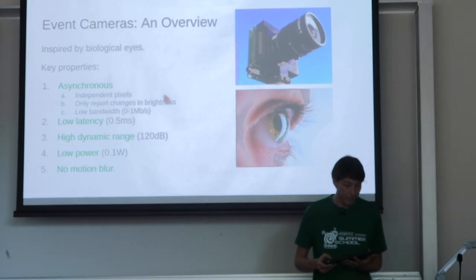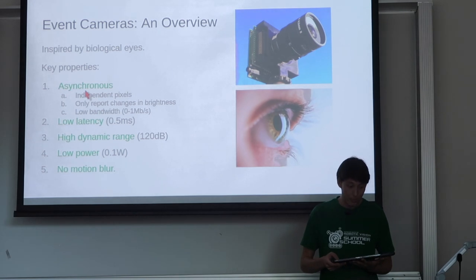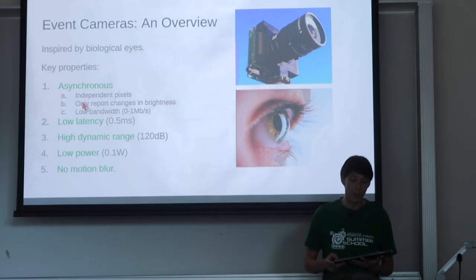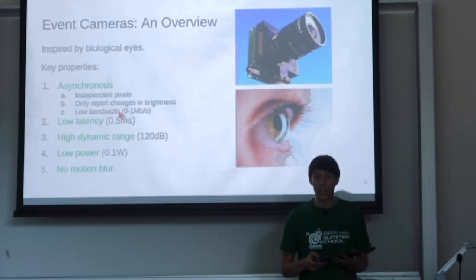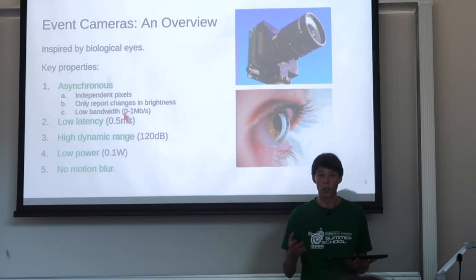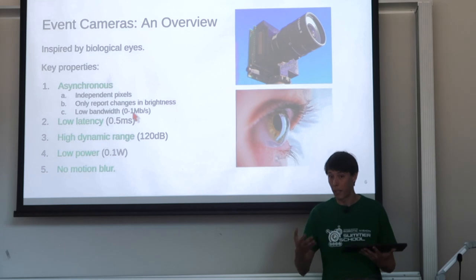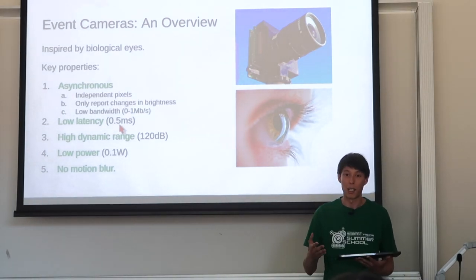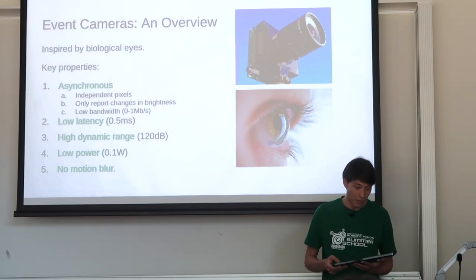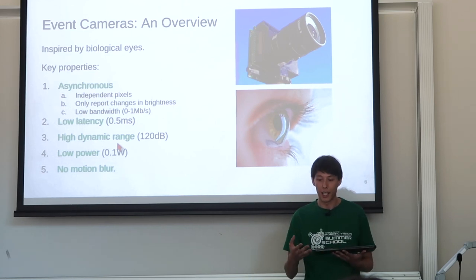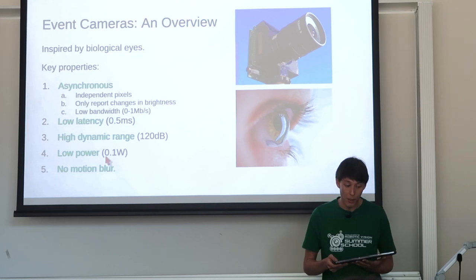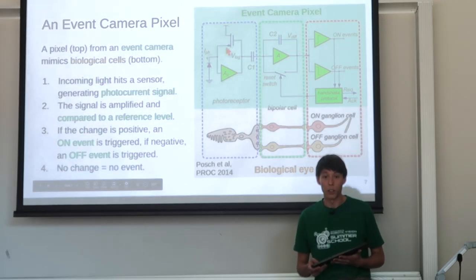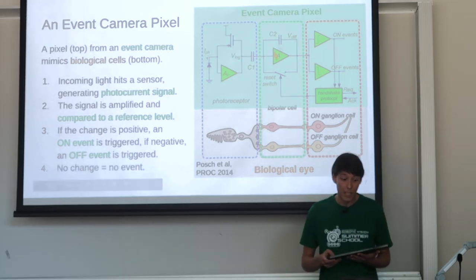Event cameras are inspired by biological eyes. Every pixel inside an event camera is independent and they only report changes in brightness, leading to a very efficient way of collecting data. If the scene is still, bandwidth would be zero — up to about one megabyte per second is reasonable. They have very low latency of 0.5 milliseconds, and in bright conditions as low as 100–150 microseconds. They have high dynamic range, consume very low power at 100 milliwatts or less, and have no motion blur.